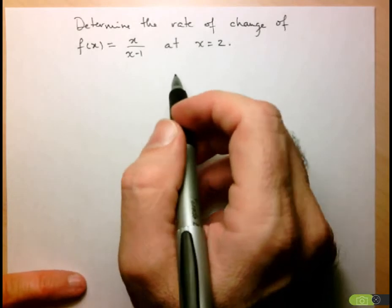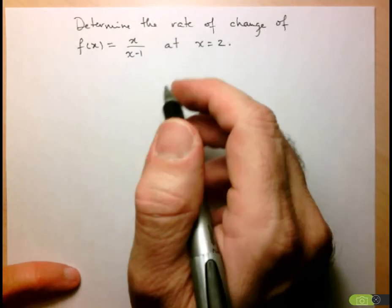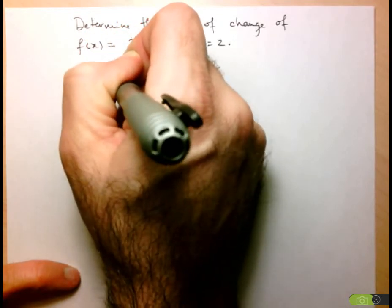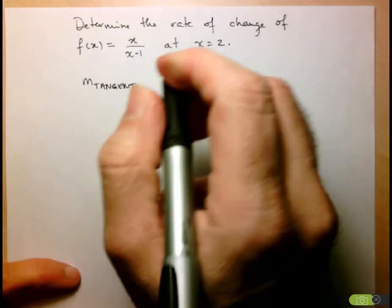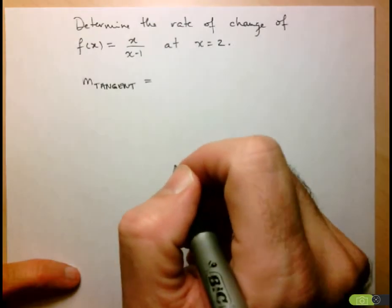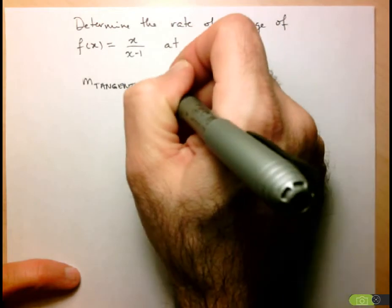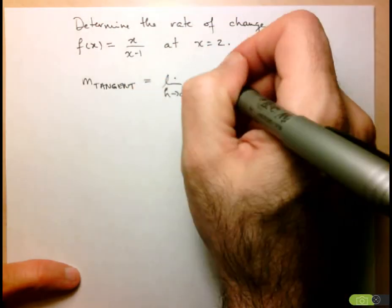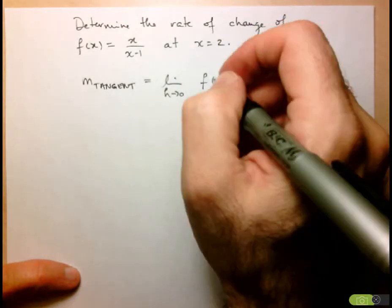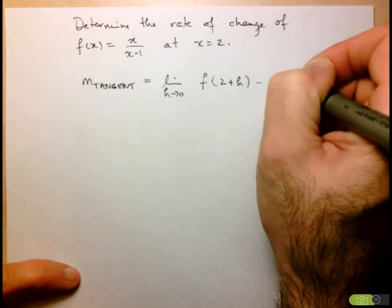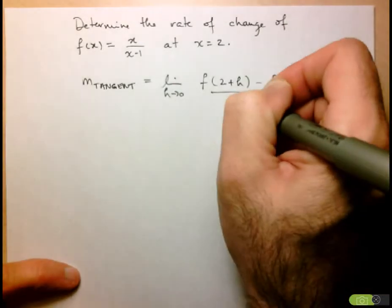The rate of change at a particular point is given by the slope of the tangent to the function at that point. This time I'm going to use the second formulation for the rate of change: take the limit as h approaches 0 of f at a plus h, so in this case a is equal to 2, so 2 plus h minus f at a, so f at 2, all over h.